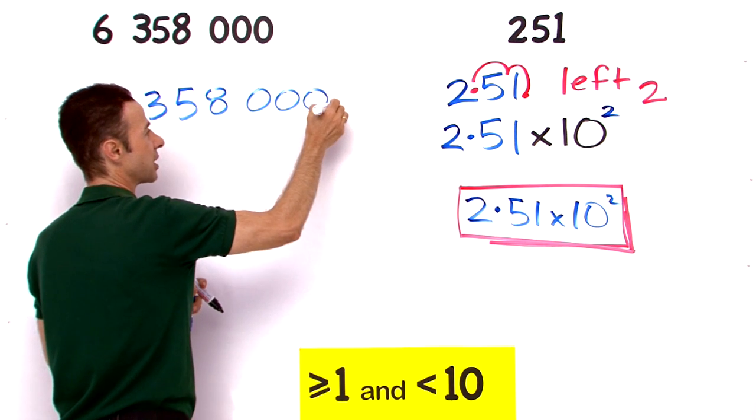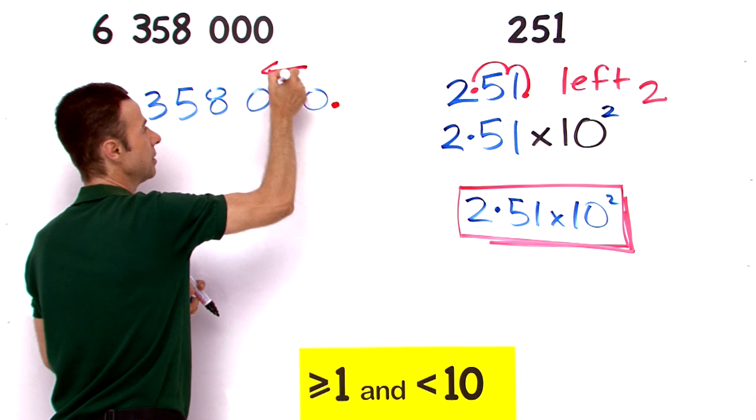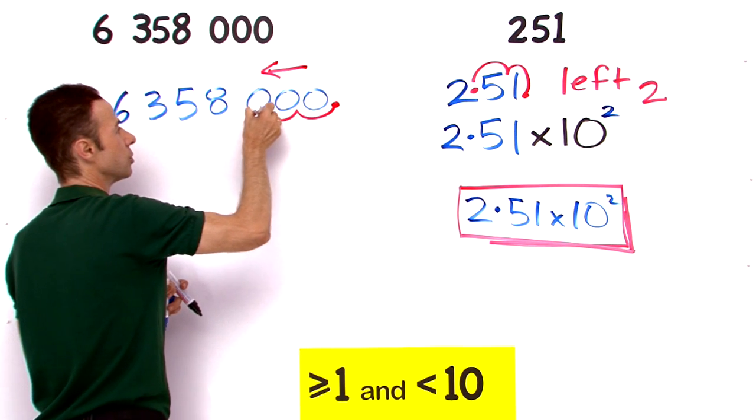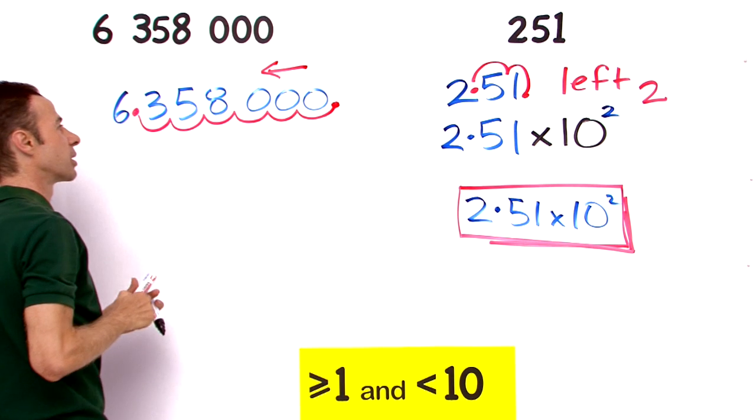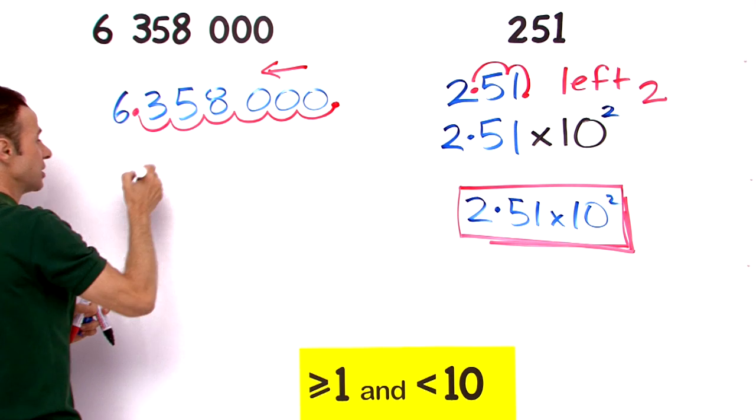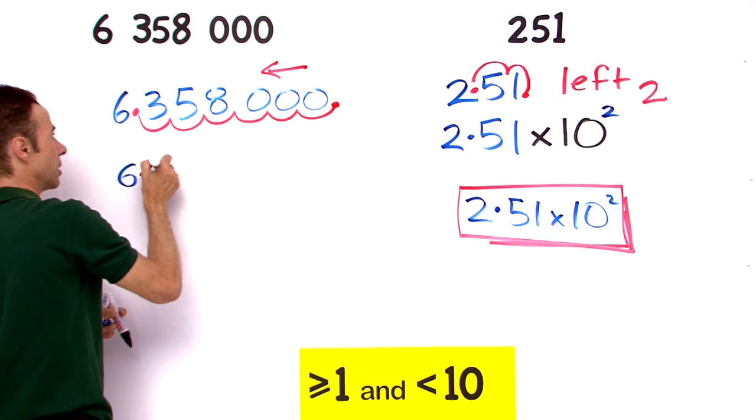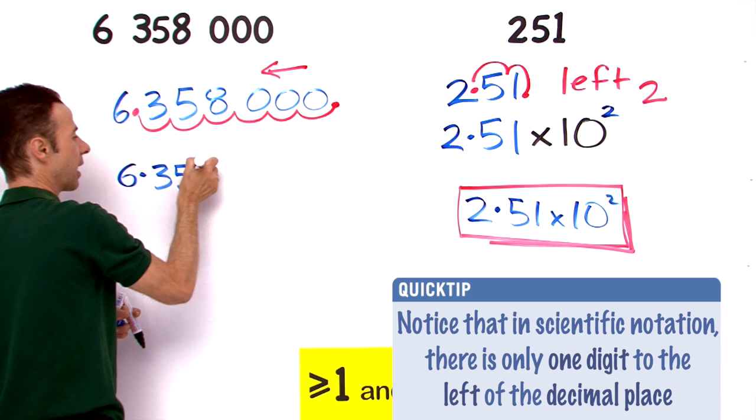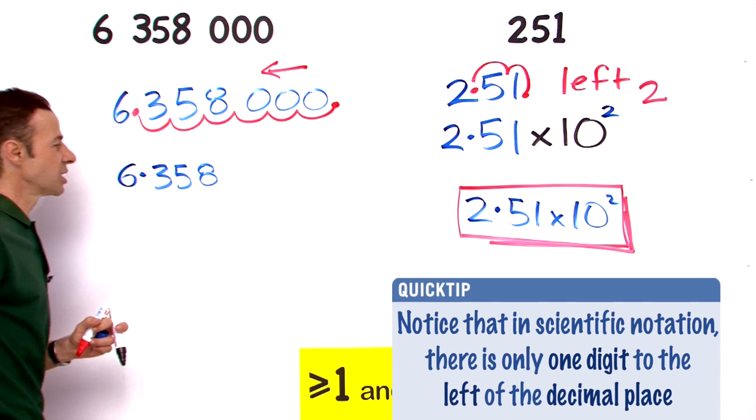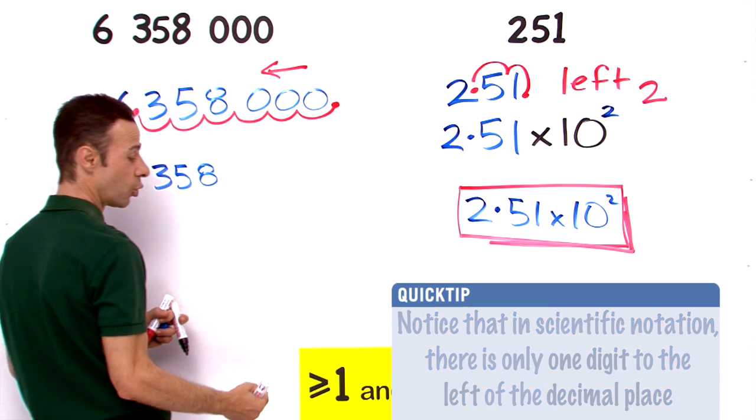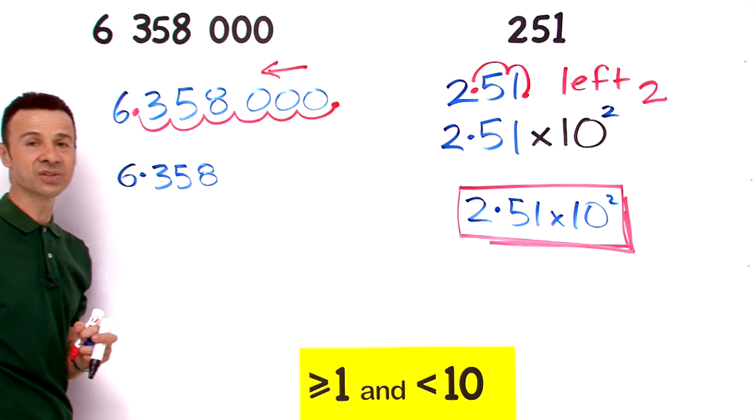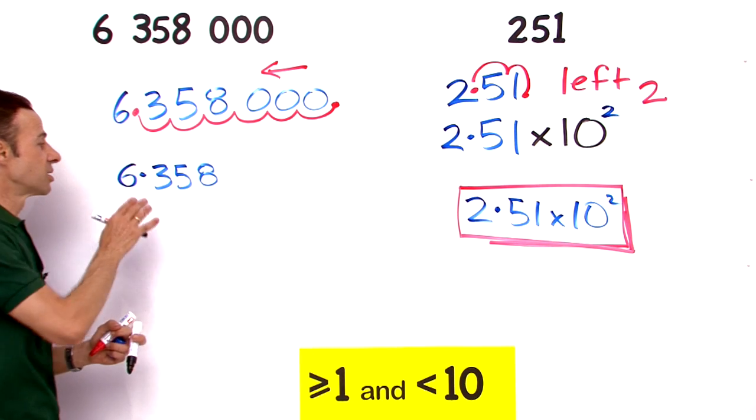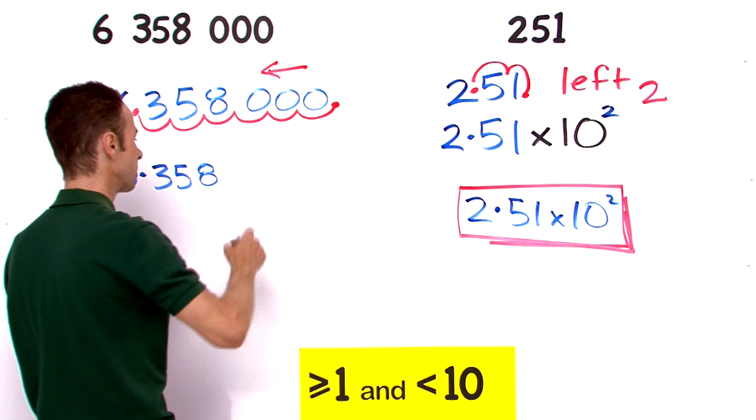We're going to go from here, we're going to move it all the way to here. So let's move it now. Let's count. We're moving to the left again: one, two, three, four, five, six. Decimal point goes right over there. So essentially this number is now 6.358. Is that greater than or equal to 1 and less than 10? Yes it is, 6.358.